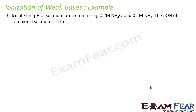Let's take one more example. Find the pH of a solution formed by mixing 0.2 M NH₄Cl and 0.1 M NH₃. The pKB of ammonia is 4.75. The reaction here is: NH₃ + H₂O → NH₄⁺ + OH⁻.